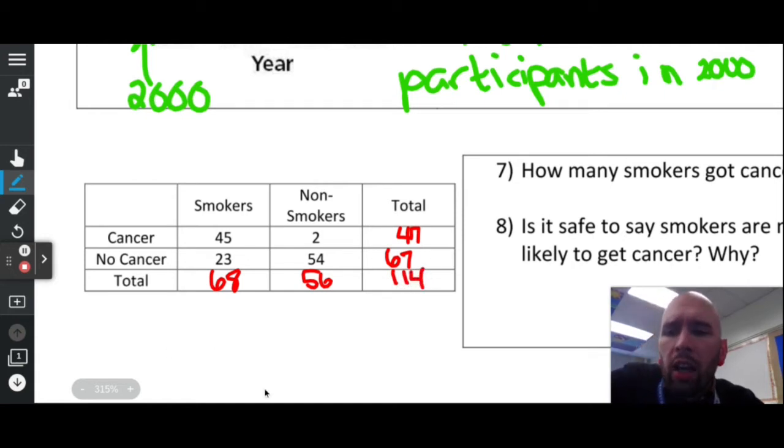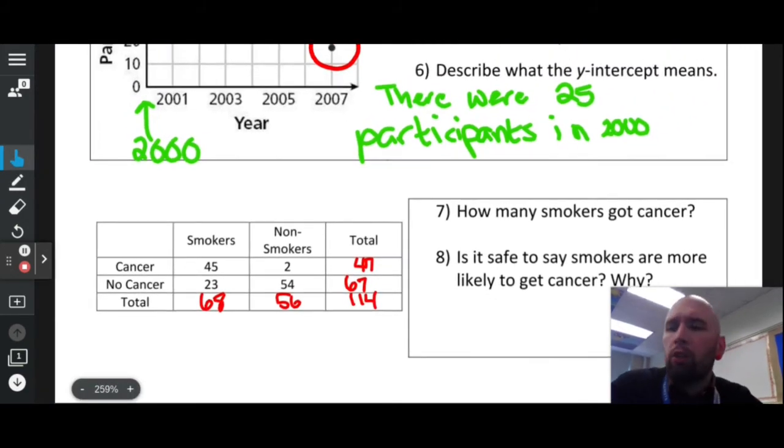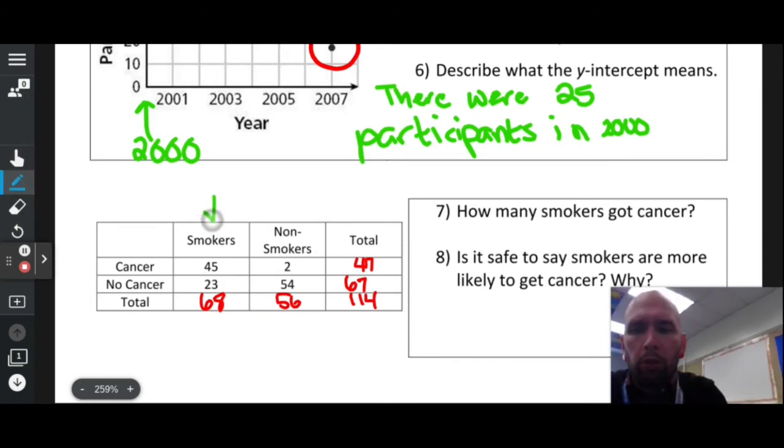I could say 45 smokers got cancer, two non-smokers got cancer, 47 total people had cancer, there are 68 total smokers, there are 56 total non-smokers, there were 114 people interviewed. How many smokers got cancer? Let's go to smokers, let's go to cancer. Everything lines up right here at 45.